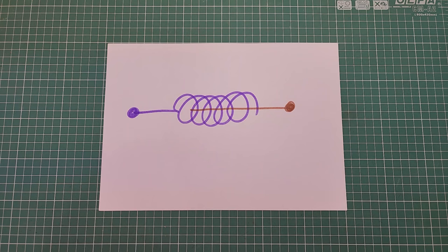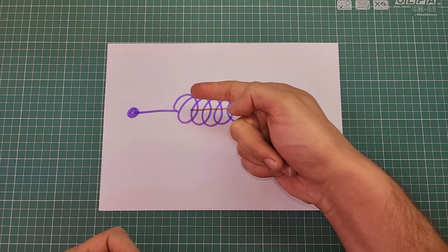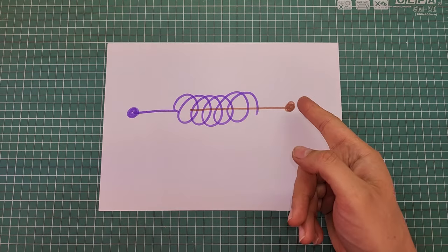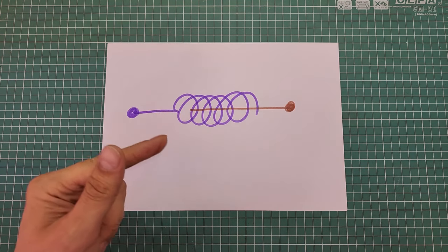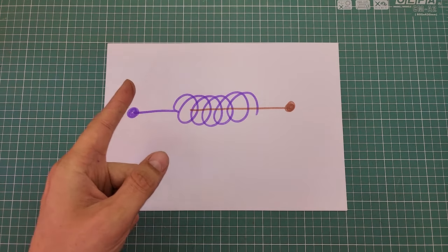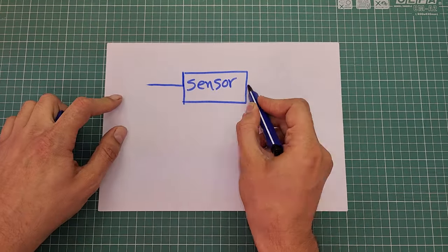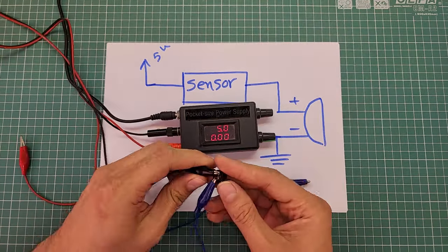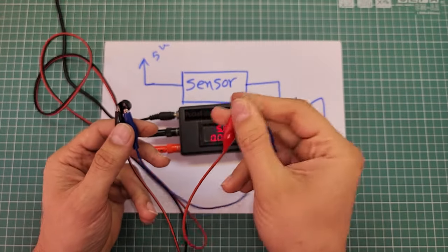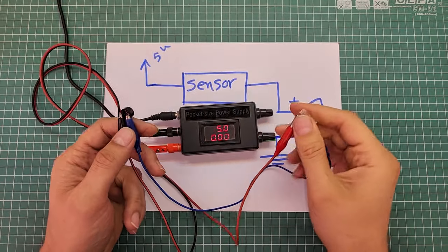The mechanism of operation of a knock sensor is simple. It consists of a spring and a pin inside. One terminal is connected to the pin and the other to the spring. When the knock sensor hits something, the spring bends and touches the pin, acting like a switch connecting two metal objects together. I am going to use an active buzzer to test the sensor — when I shake the sensor, a beep sound comes from the buzzer.